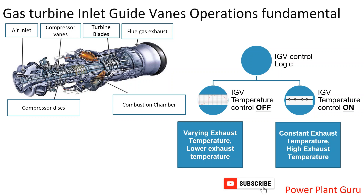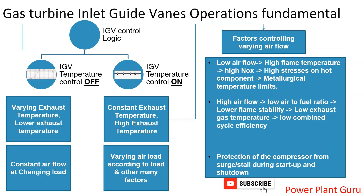Going deeper into IGV operation — how are the boundaries decided? The lower temperature boundary, which corresponds to higher air flow: if you increase air flow, the air-to-fuel ratio increases. Per unit quantity of fuel, more air is flowing, so flame strength in the combustion zone becomes low and approaches the lower stabilization limit. That is the lowest temperature limit, meaning the highest air flow, and this leads to lower combined cycle efficiency.